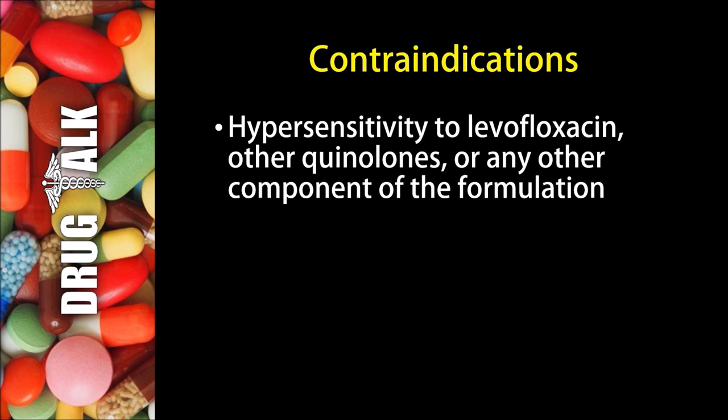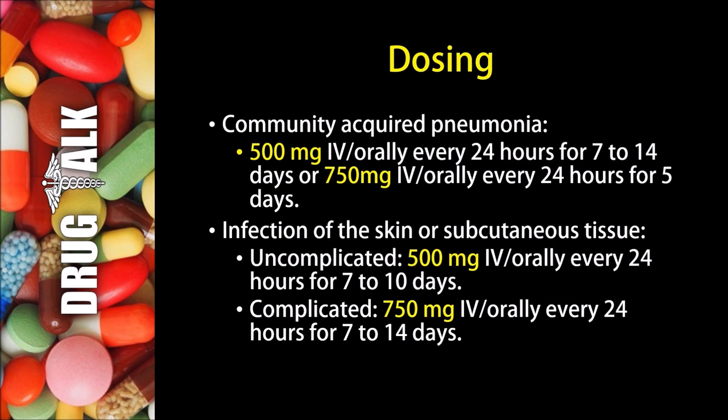Now what about dosing with levofloxacin? In the treatment of community-acquired pneumonia, we would typically see 500 mg given intravenously or orally every 24 hours for 7 to 14 days, or a patient could receive 750 mg intravenously or orally every 24 hours for 5 days. For an infection of the skin or subcutaneous tissue, if it was uncomplicated, we may see 500 mg intravenously or orally every 24 hours for 7 to 10 days. And if it was a complicated infection, we may see 750 mg intravenously or orally every 24 hours for 7 to 14 days.